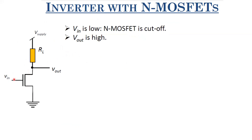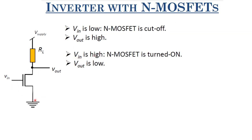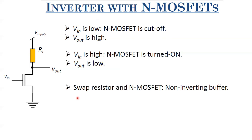When VIN = 0 (low), the transistor is in cutoff — very high resistance, ID = 0 — so V_supply connects directly to VOUT, giving VOUT = high. When VIN is high, VGS is high, the transistor conducts, and VOUT discharges toward ground. However, VOUT does not reach ground completely — it forms a resistor divider with R_L and R_on: VOUT_low = VDD × R_on/(R_L + R_on), which is small but not zero. If we swap the resistor and the N-MOSFET, it becomes a non-inverting buffer.